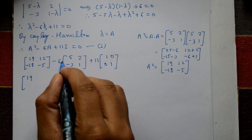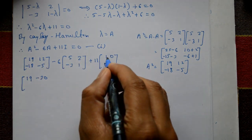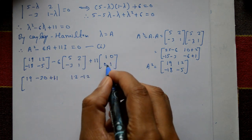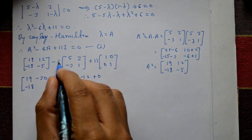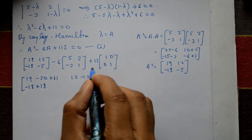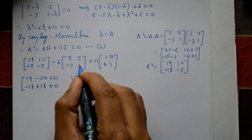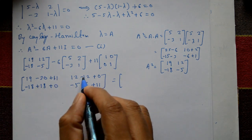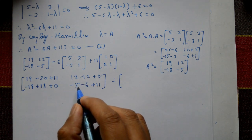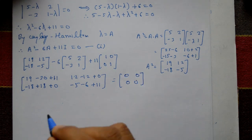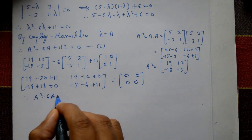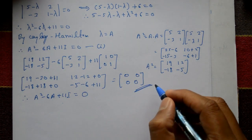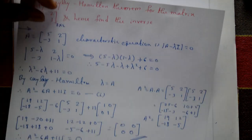Computing element by element: 19 - 30 + 11 = 0; 12 - 12 + 0 = 0; -18 + 18 + 0 = 0; -5 + 6 - (-5+6-1) = 0. Therefore A² - 6A + 11I equals the null matrix, with all elements equal to 0. This verifies the Cayley-Hamilton theorem.